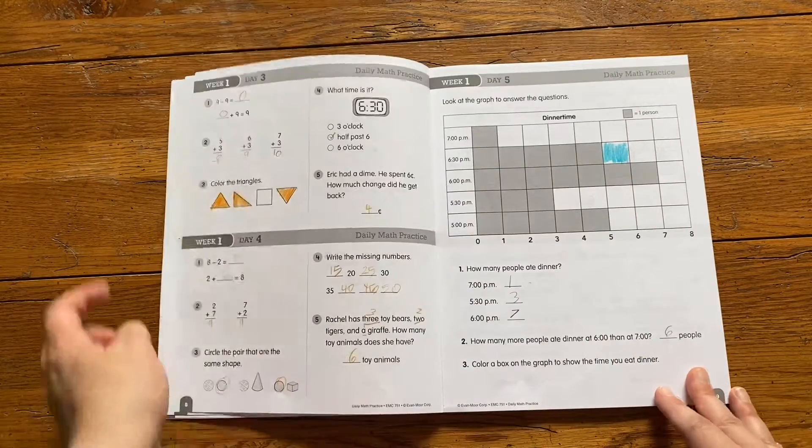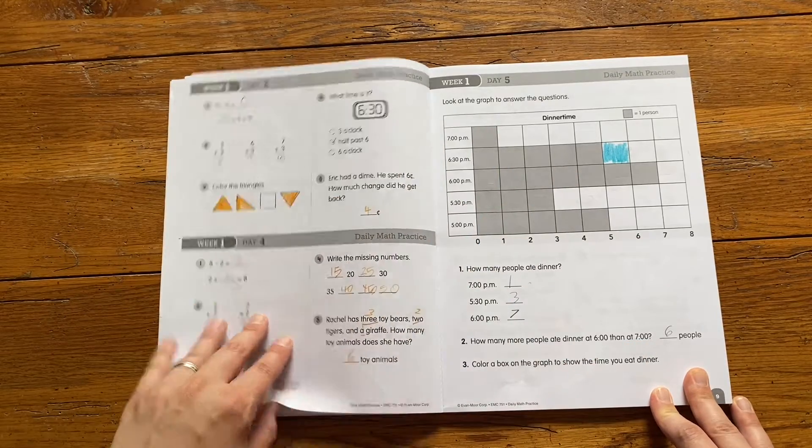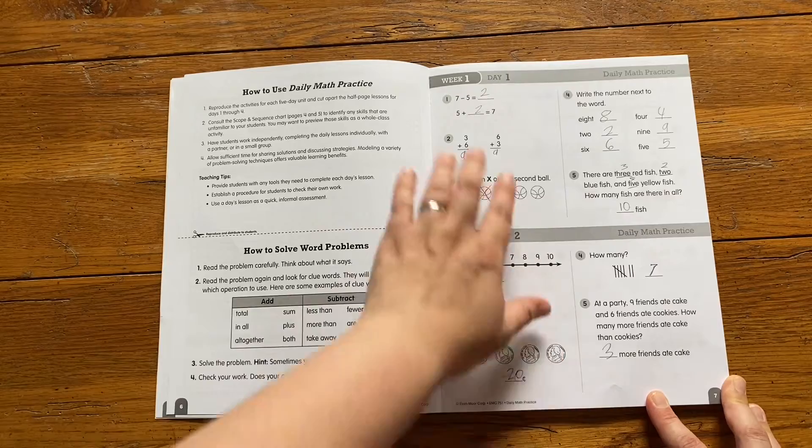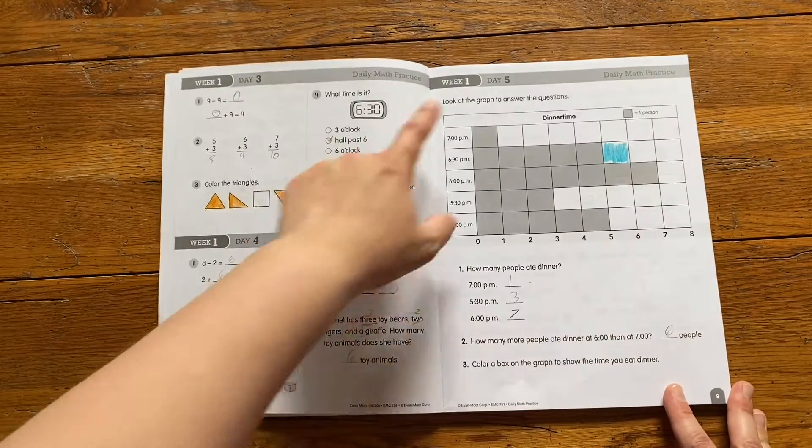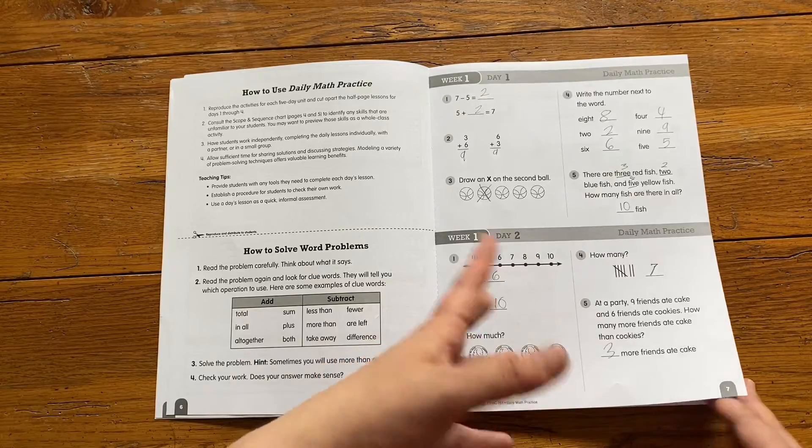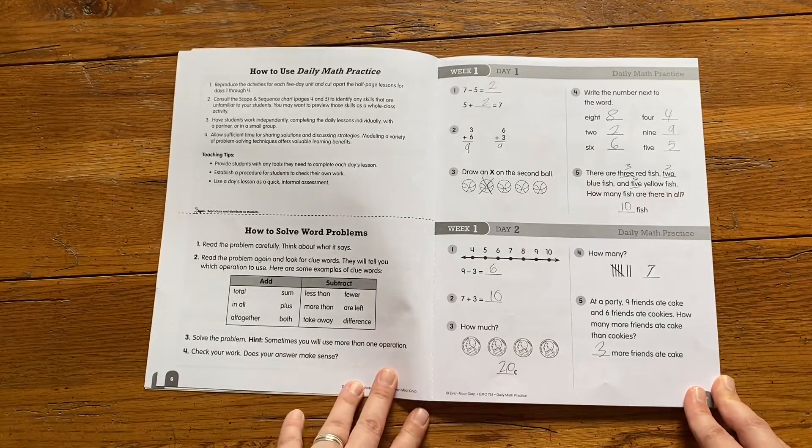So your first four days are half page and then day 5 is usually a bigger chart type page. They take him just a few minutes to do. I usually have him do one page, so we'll do two chunks, two chunks, and then this. That way he doesn't have to keep up with how many he's done. He knows to do a page and that will get through it a little bit quicker.